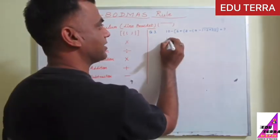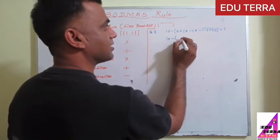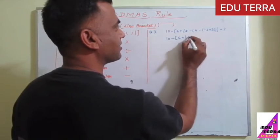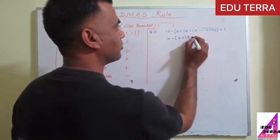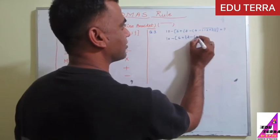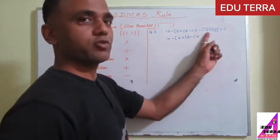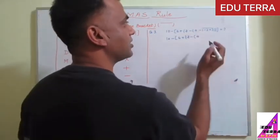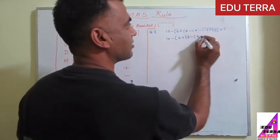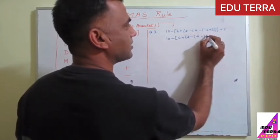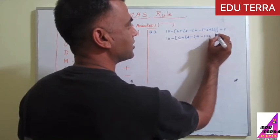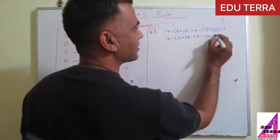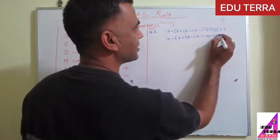Here it will be 10 minus 6 plus this middle bracket, 2 minus small bracket 4. When you will remove, try to remove this bar bracket, then outside it is given negative sign, so sign will be changed. It will be like minus 1, then plus 2, minus 2, then minus 3. So we removed this bar bracket, then this one, then this, then this one.